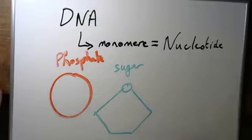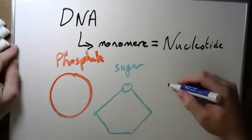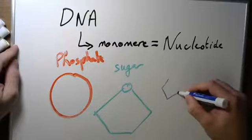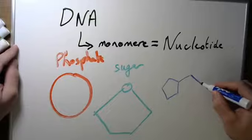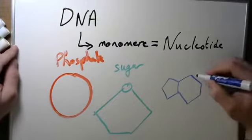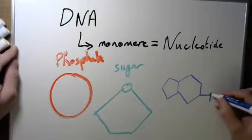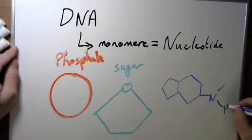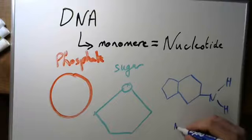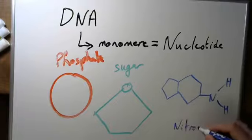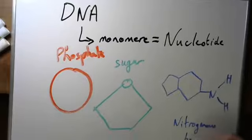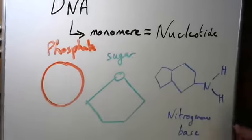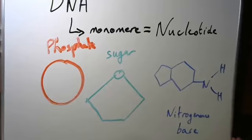And the last one is the nitrogenous base. The base here is usually a ring base with rings of nitrogen and carbon. What's really important is that you actually know some things about those bases.